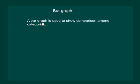A bar graph is used to show comparison among categories. Let us try to understand this by using an example. Consider a student A.